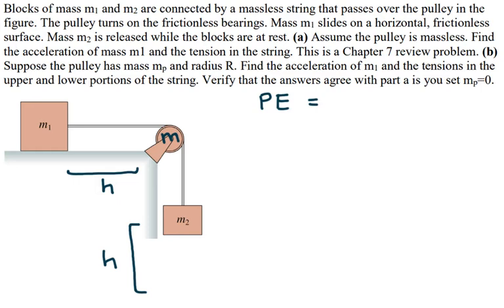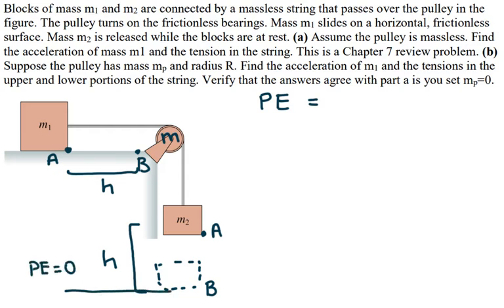I'll call the initial positions point A and the final positions point B, after both masses move a distance H. If I set the potential energy of mass 2 at point B equal to zero, then the potential energy at point A for mass 2 is M2gH. This represents the change in potential energy of the system from A to B. At point B, block 2 will have some velocity.